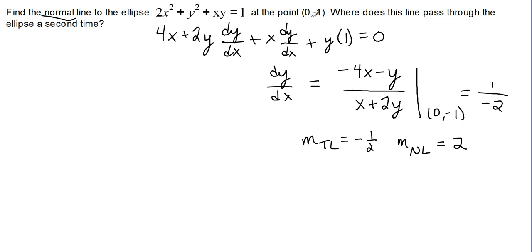We now know that our line goes through the point (0, -1), which is a y-intercept, so we can just go straight into slope-intercept form. So y equals m, our slope, 2x plus b, or plus negative 1, so minus 1.